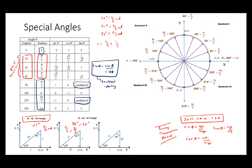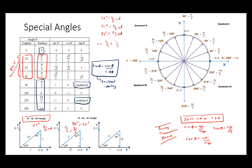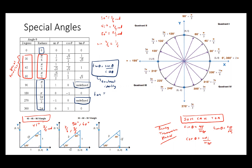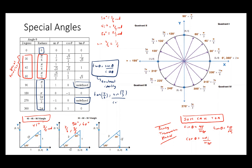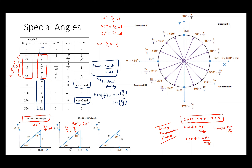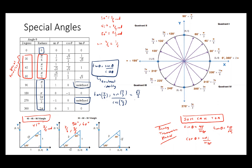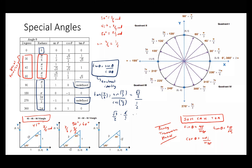An identity is basically a universal formula that works for every value of the domain. For example, tan 60 degrees or tan π/3 equals sine π/3 over cosine π/3. Sine π/3 is √3/2 and cosine π/3 is 1/2. Dividing these two fractions gives √3/1, which is √3.